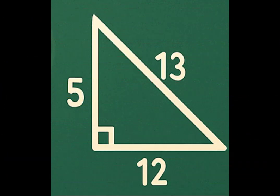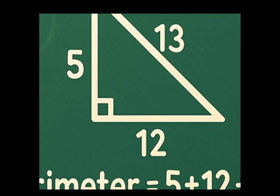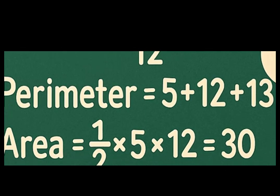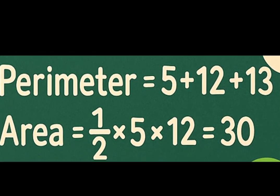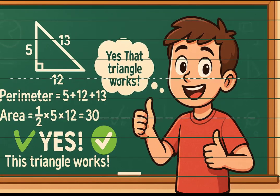Now try 5, 12, 13. Perimeter is 5 plus 12 plus 13, which gives 30. Area is 1 half times 5 times 12, which is also 30. Yes, this triangle works. But are there any others?